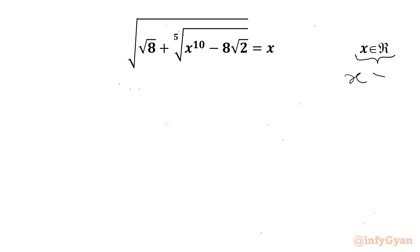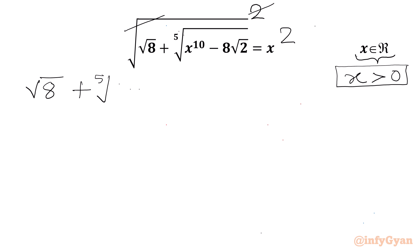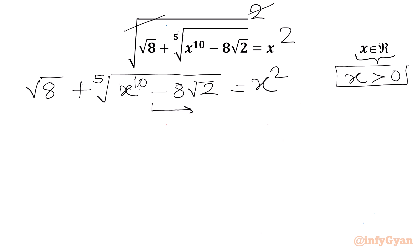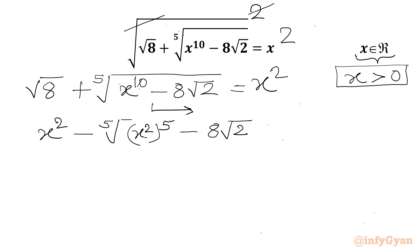The right hand side must be positive, so x must be greater than 0. Now we will consider squaring both sides. The square root and square will cancel. We write: square root of 8 plus the 5th root of (x^10) minus 8√2 equals x² · √2. We can write √8 as 2√2, since 8 = 4 × 2 and √4 = 2.